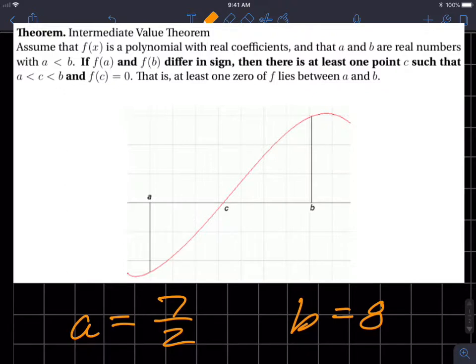If f of a and f of b differ in sign, then there's at least one point c such that a is less than c is less than b, and f of c is equal to 0. That is, at least one zero lies between a and b.